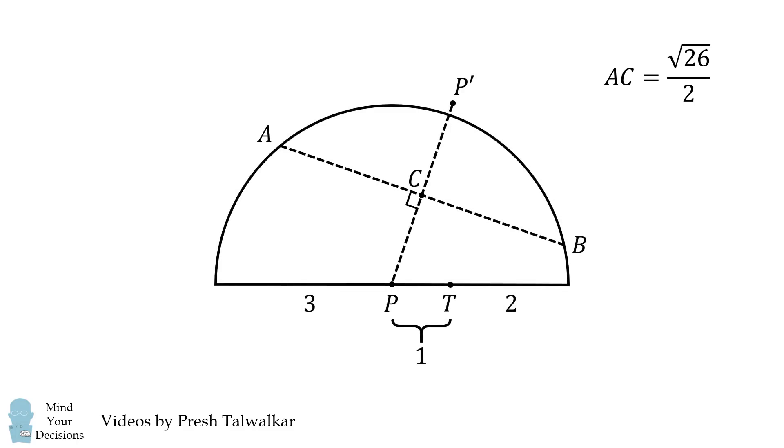We then go back to the diagram and we can calculate the length of AB, which will be exactly twice AC. And therefore, the length of the folded line will be equal to the square root of 26, which is approximately 5.1. And that's the answer.